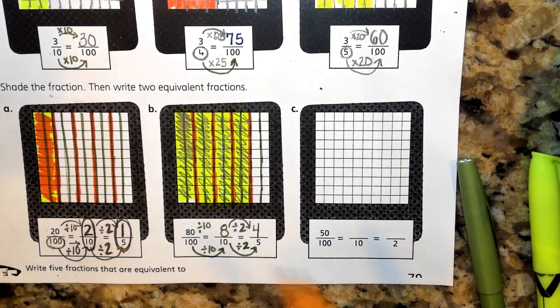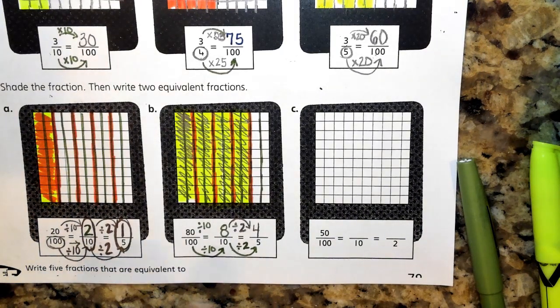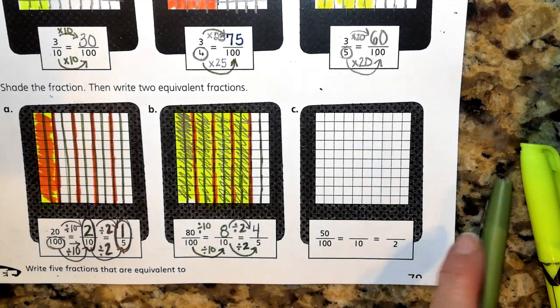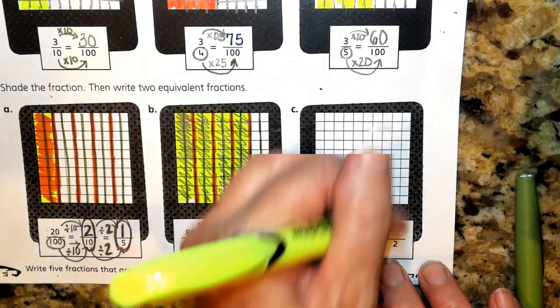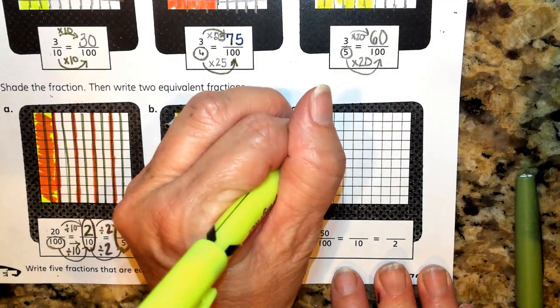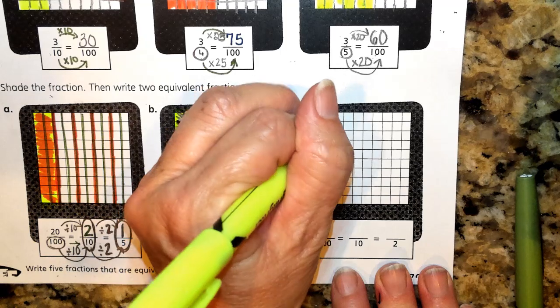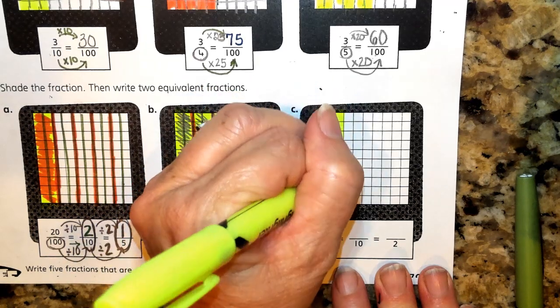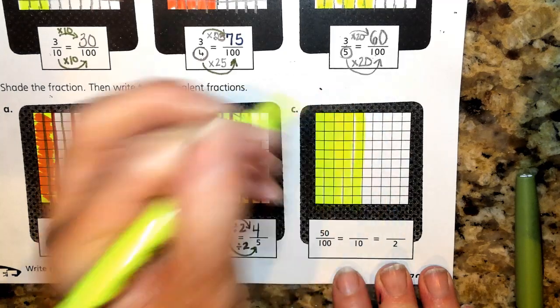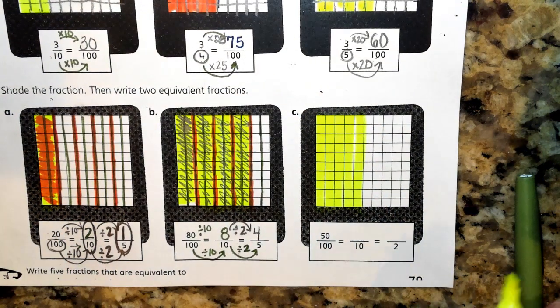Alright, and we're on our last model for today. So when I observe this and I see 50 hundredths, I first think, okay, we've got 100 equal pieces, I need to shade in 50. So we have 10, 20, 30, 40, 50. There's my 50 equal pieces.